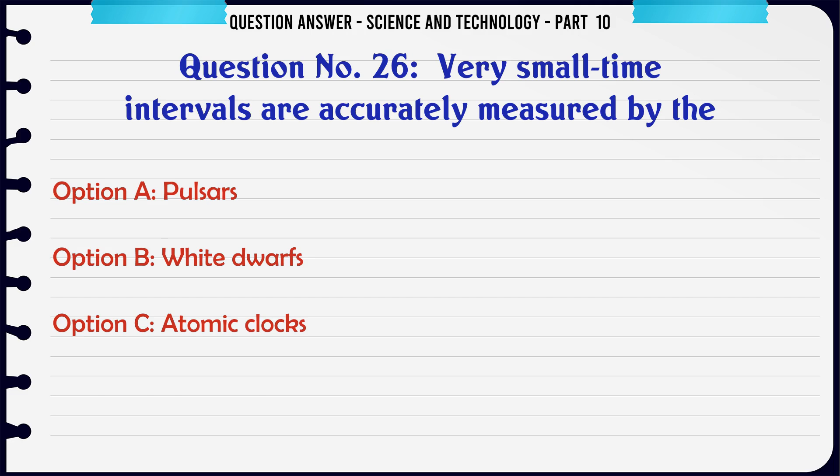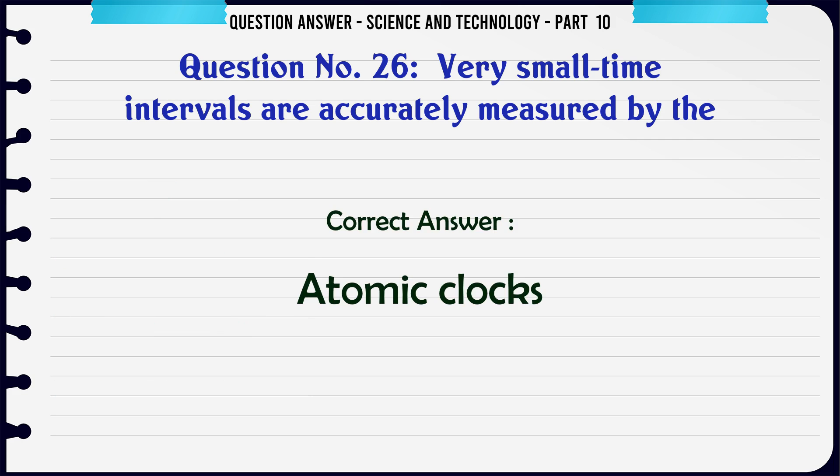Very small time intervals are accurately measured by the. A. Pulsars. B. White dwarfs. C. Atomic clocks. D. Quartz clocks. The correct answer is Atomic clocks.